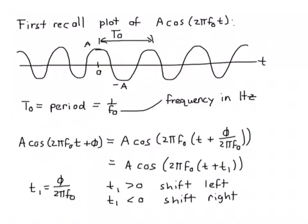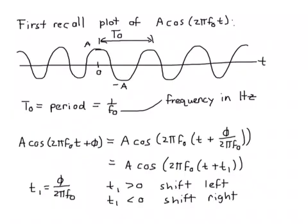Signals of this form are actually pretty easy to sketch. Once we know the amplitude and the frequency, that tells us what the basic wave looks like. Then we just shift it right or left depending on the value of t₁. So let's see a couple of examples.